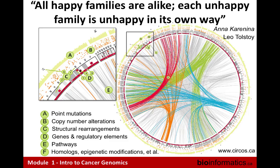This is a quote from my postdoc supervisor Matthew Mearsson: all happy cells are alike, but each unhappy cell is unhappy in its own way. This is a plot from circles.ca, Martin Chbinski's site from the BC Cancer Agency, showing all the ways a genome can be modified. These arcs show regions of the genome that are related to each other. Zooming in, each track refers to one of the different ways a cancer genome can differ from another.